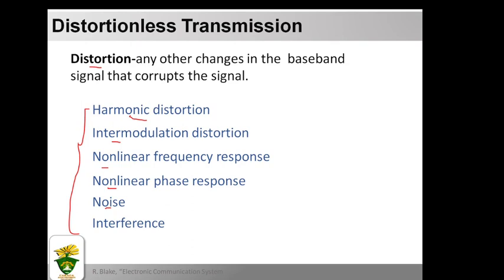Noise is another form of distortion — both the transmitter and receiver add noise, and the channel is also noisy. This noise adds to the signal and masks it. Noise will be discussed later in the next chapter. Interference occurs when more than one signal uses the same transmission medium and the signals interact with each other. One advantage of digital communication is the ability to regenerate a signal that has been corrupted by noise and distortion.